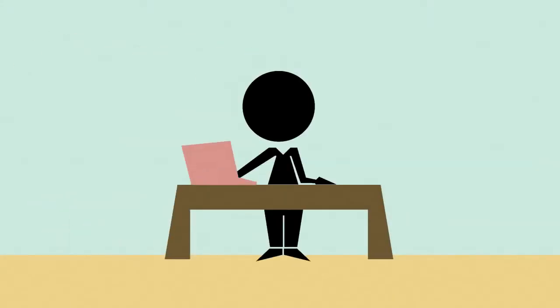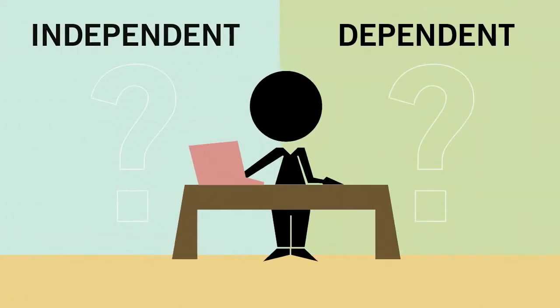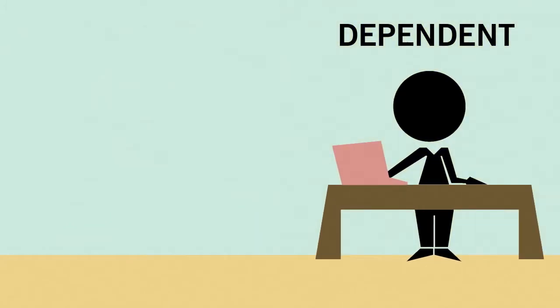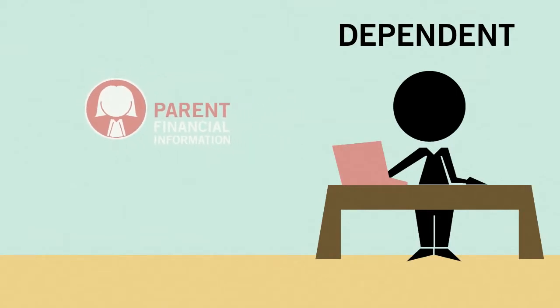When you fill out the FAFSA, you'll be asked several questions that will determine whether you are an independent or dependent student. This is an important distinction, because if you're a dependent student, then you'll need to include your parents' financial information on your FAFSA. This means that your parents' financial information will be considered along with your information to determine your eligibility for federal student aid.